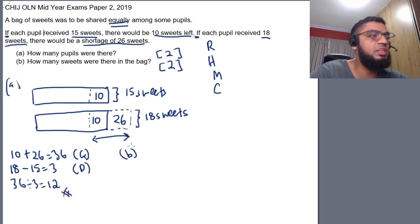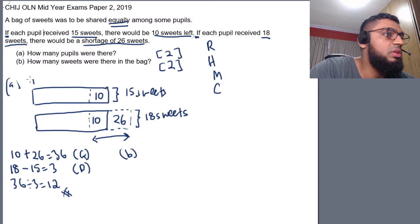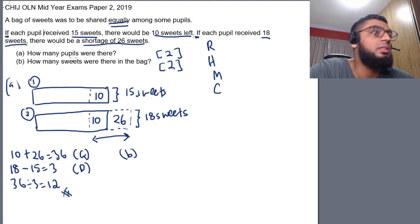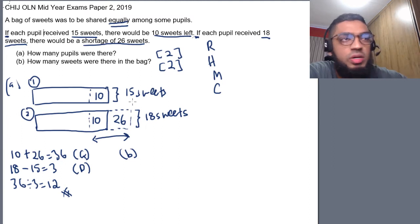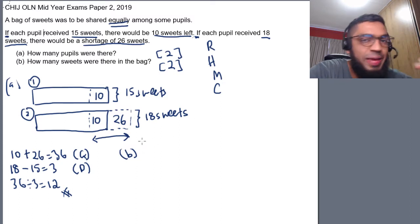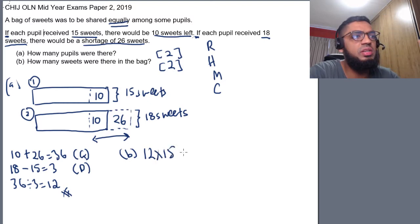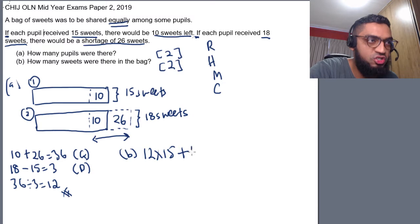Now, for part B. Since we know there are 12 pupils, we can use either the model number 1 or model number 2 to get the number of sweets that were in the bag. Number of pupils is 12 pupils. How many sweets were there in the bag? Let's say you want to use the first model. The first model says that if you give 15 sweets to each pupil, you'll be left with 10 sweets, extra 10 sweets. So, the number of sweets based on that first model will be 12 multiplied by 15 first because each student got 15 sweets. And then you have to add the extra 10 sweets. And this will be your answer.